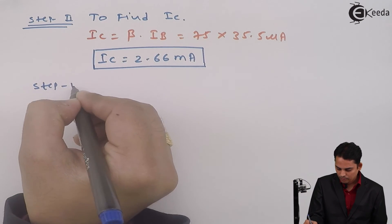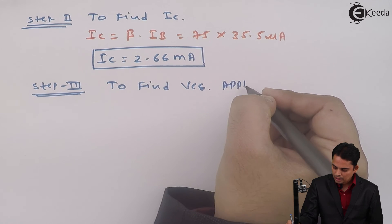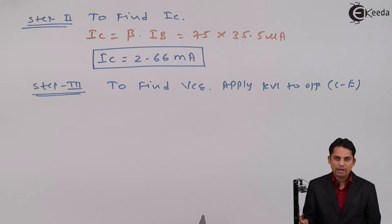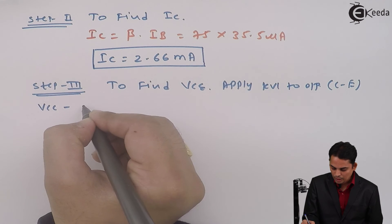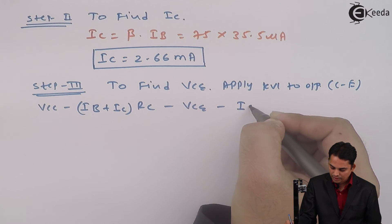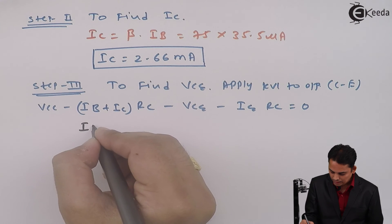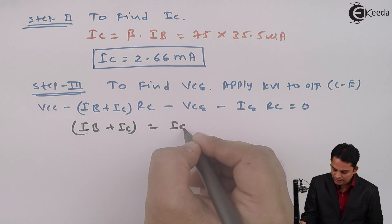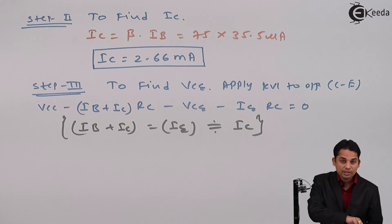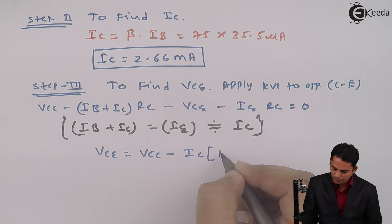Now step 3: to find VCE, for which apply KVL to output, that is collector to emitter. Equation will become VCC minus (IB + IC) into RC minus VCE minus IE into RE is equal to 0. So in this we will assume that IB plus IC is equal to IE, which is approximately equal to IC.